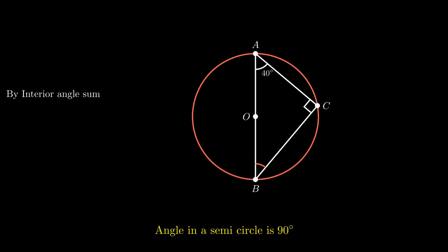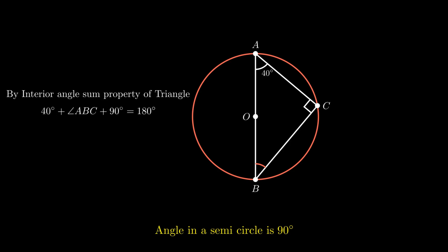Now in triangle ACB, by using the interior angle sum property, the sum of angle CAB, angle ABC and angle ACB equals 180 degrees. On putting the values of angle CAB as 40 degrees and angle ACB as 90 degrees, we get angle ABC plus 130 equals 180. On transposing, angle ABC equals 180 minus 130, which is equal to 50 degrees.